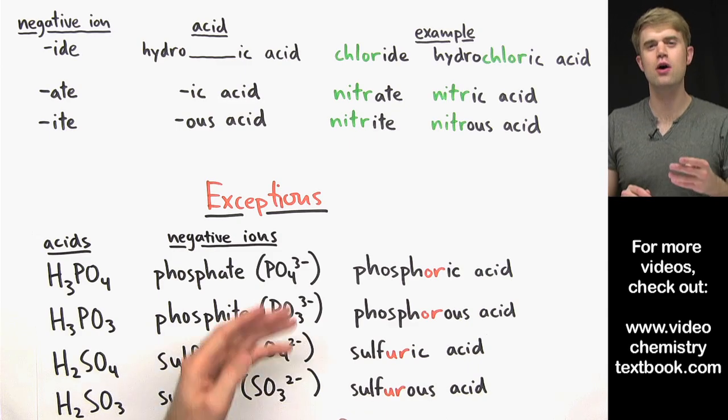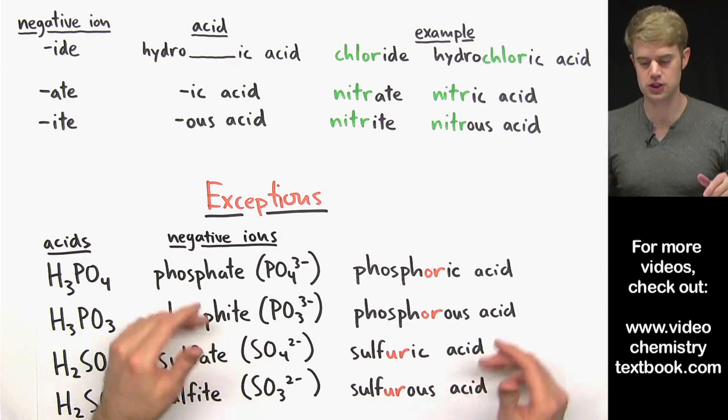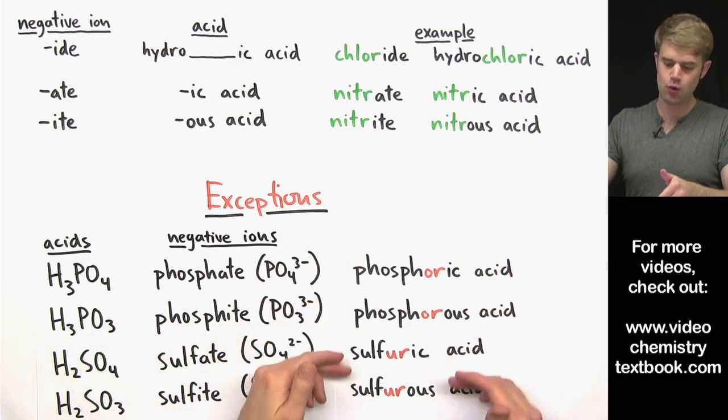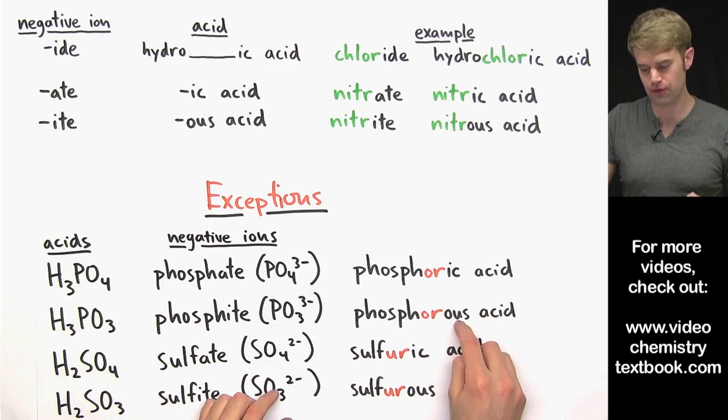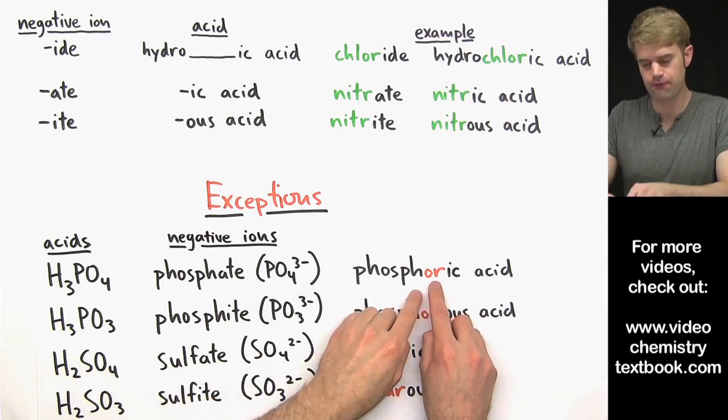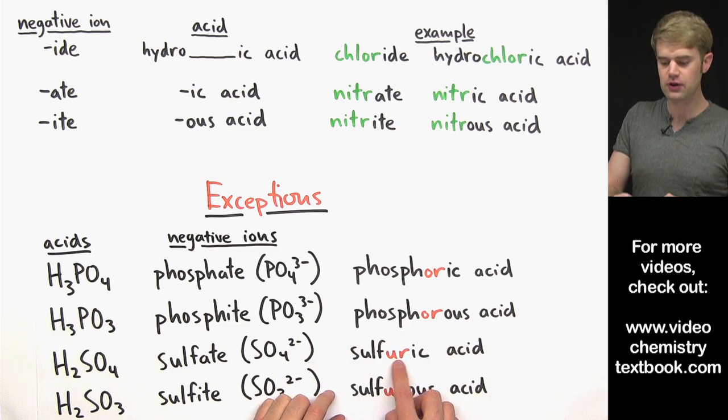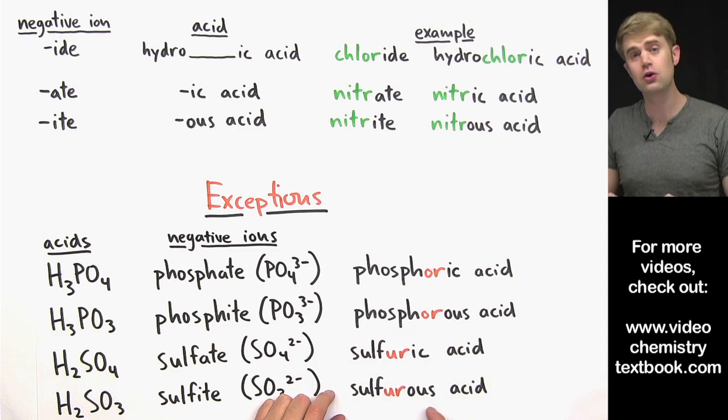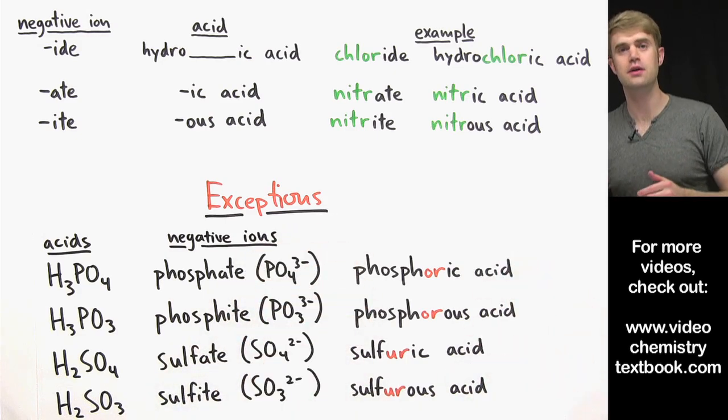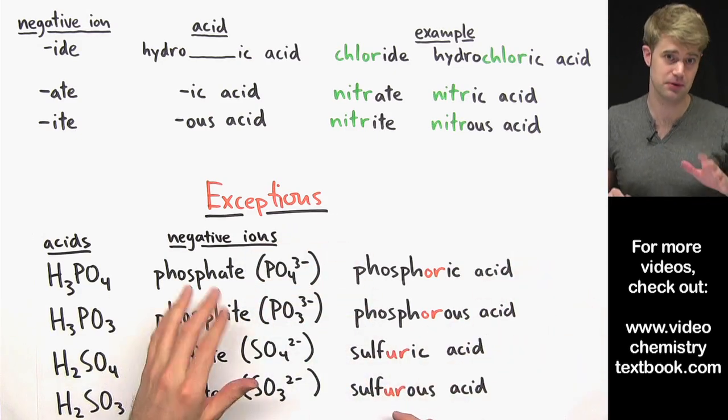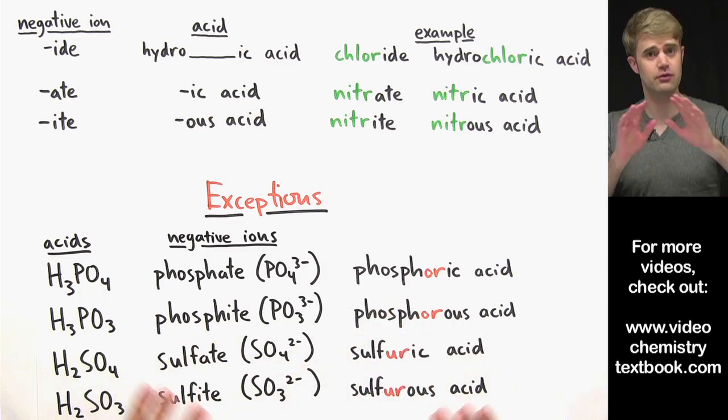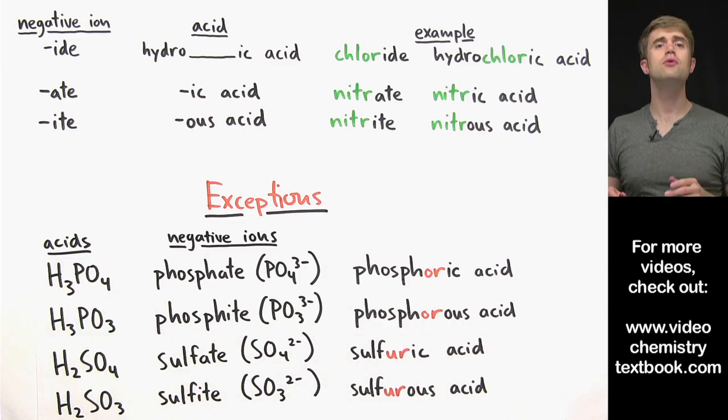Phosphorous acid is one of four important exceptions for acid names. In each one of these, we've got to add a little something before the ending. So four exceptions are phosphoric acid, phosphorous acid, sulfuric acid, and sulfurous acid. So just learn these so you won't get tripped up by them in the future. We're going to do a few more examples of naming. If you've already got it down, just turn off the video and move on.